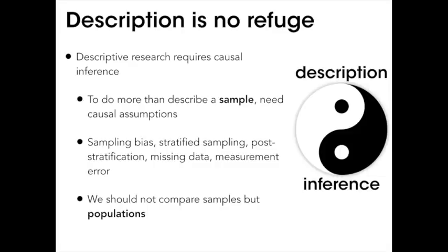Descriptive research is incredibly important — just getting the description of cultural diversity is our first mission in anthropology. And this is also a causal problem. Getting description correctly depends upon describing how the sample differs from the population you want to describe. And those are causal assumptions — causal assumptions about how the measurements work, about why some observations are missing, and so on.